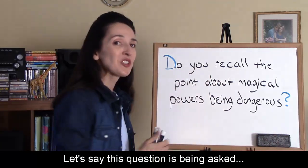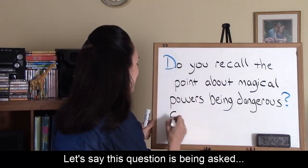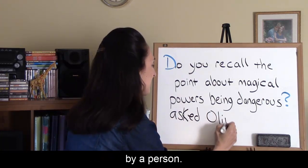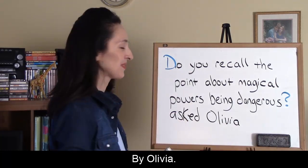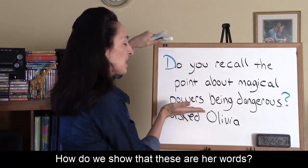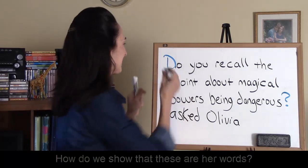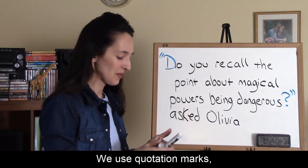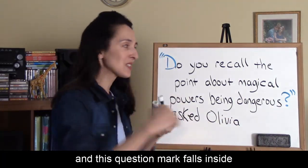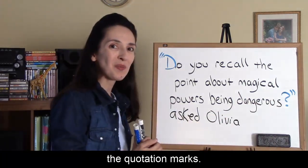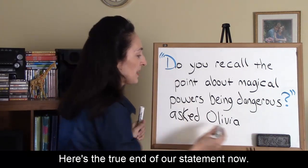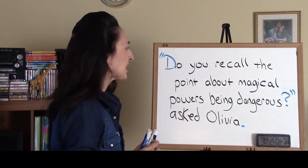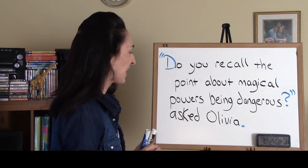Let's say this question is being asked by someone. How do we show that these are her words? We use quotation marks, and this question mark falls inside the quotation marks. Here's the true end of our statement now — we need a period. 'Do you recall the point about magical powers being dangerous?' asked Olivia.